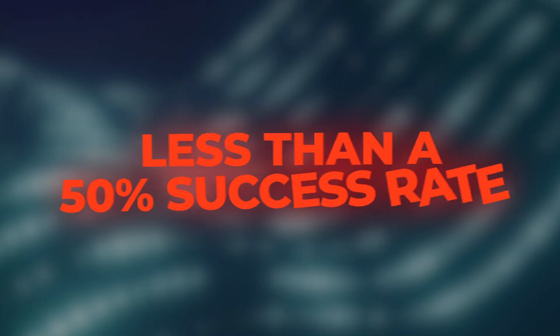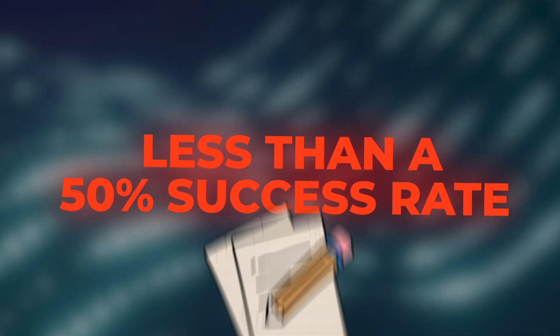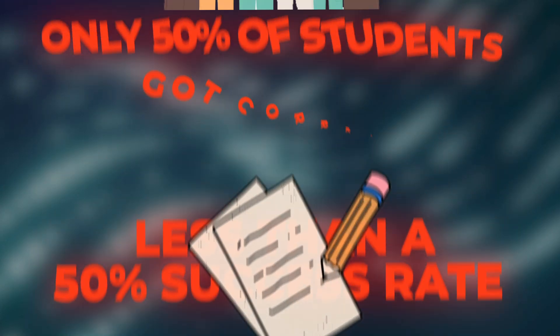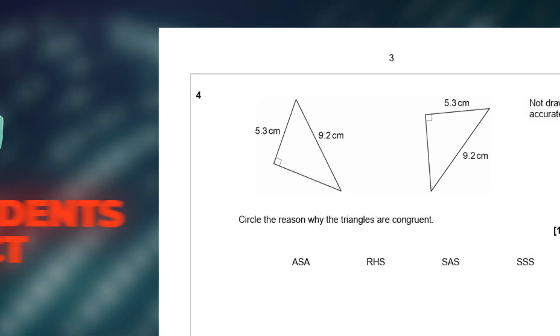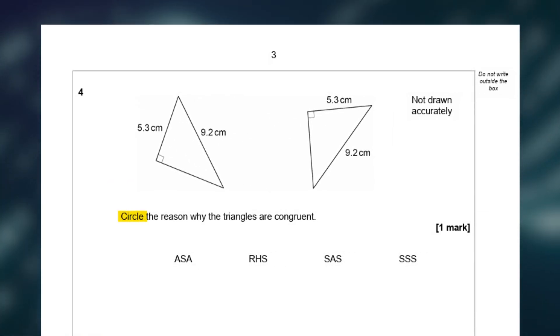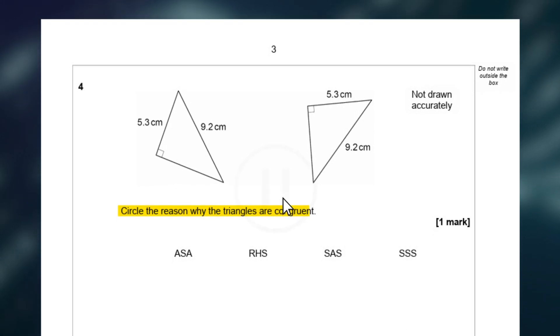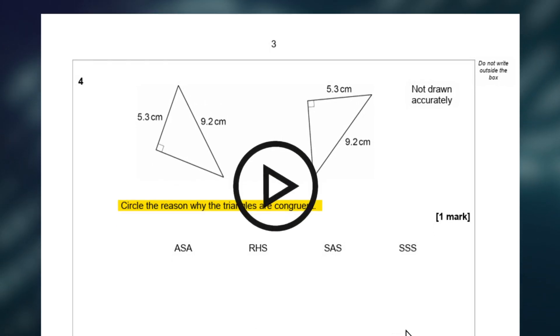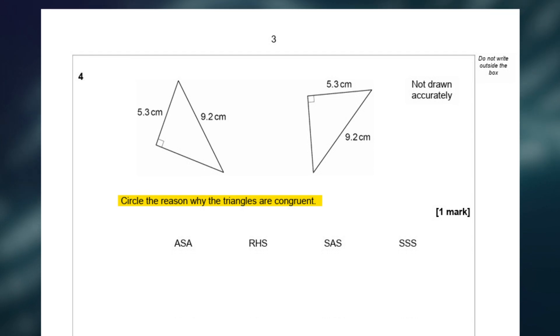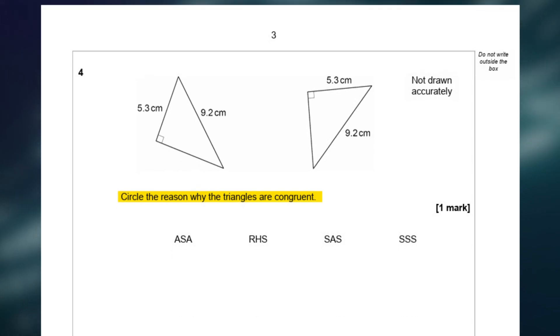The first question that we will be going over is a question that had less than a 50% success rate. It was the only multiple choice question that under 50% of students got correct. And this was question 4, and it asks you to circle the reasons why the two triangles shown are congruent. Pause it right here, try and have a go at this question yourself, and trust me, you're going to want to make a note of this question because it could easily come up again.